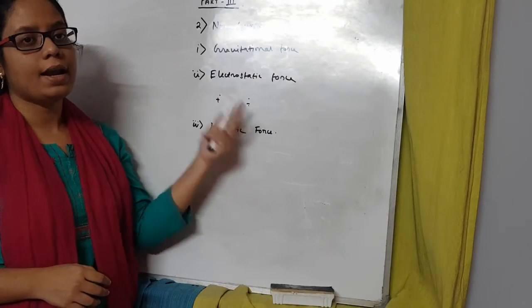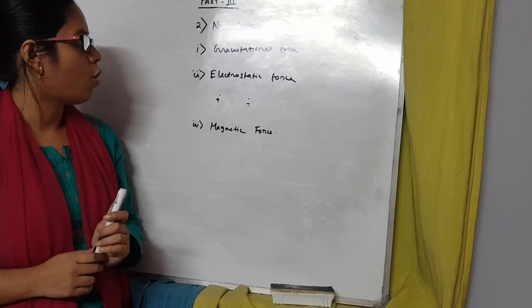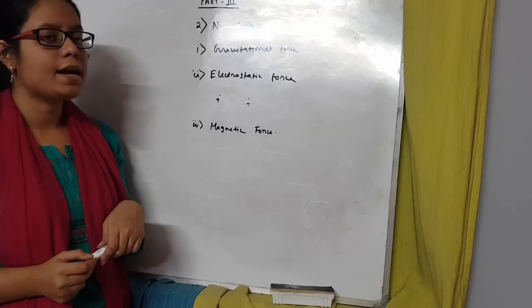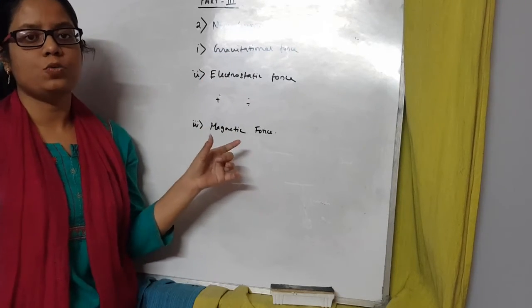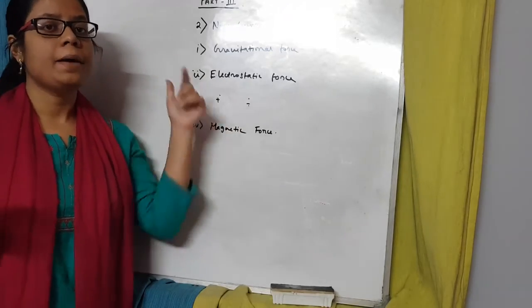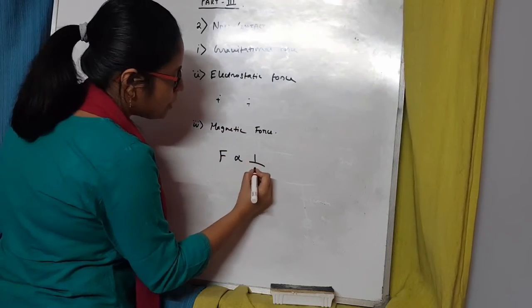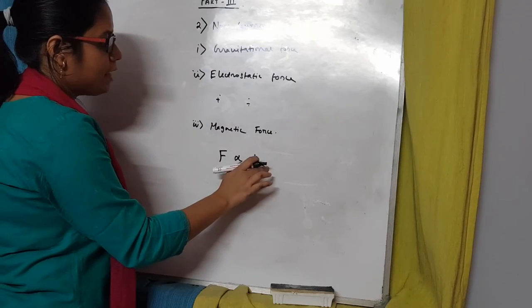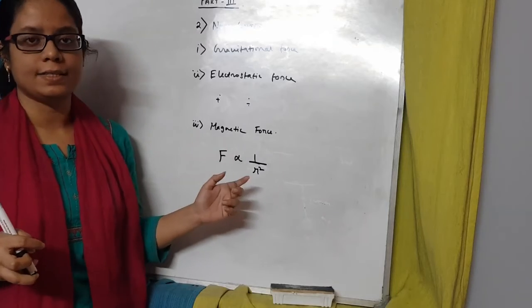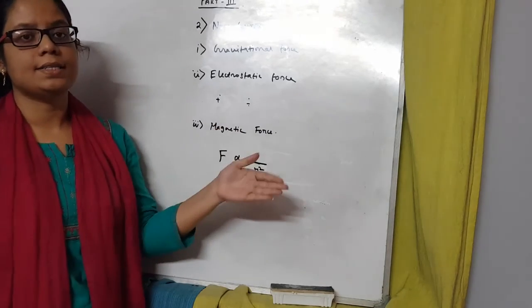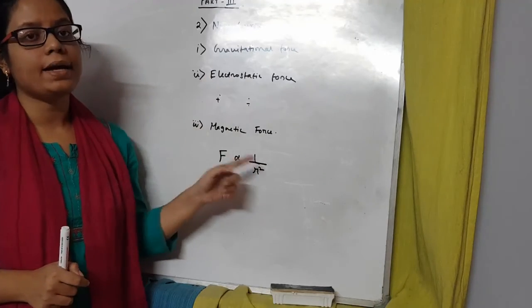Repulsion happens when two like charges or two like poles are present; attraction happens when unlike charges or unlike poles are present. An important property of non-contact forces is that they are dependent on the distance of separation between the two bodies. The magnitude of the force is inversely proportional to the square of the distance between them — so if the distance is doubled, the force becomes one-fourth. This is known as the inverse square law, and it is followed by these non-contact forces.